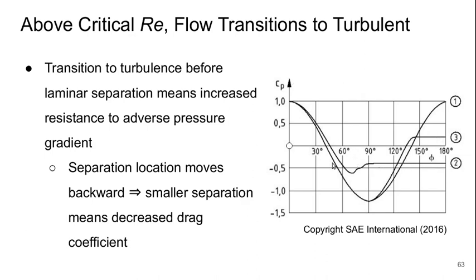Then curve three is in the turbulent regime where the flow can get all the way up to about 130 to 140 degrees around before it separates. So we can see that we're getting a lot closer to that ideal pressure distribution with the flow transitioning to turbulence before it separates and therefore it stands to reason that this is going to reduce the drag.